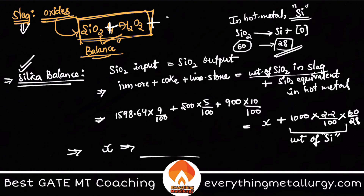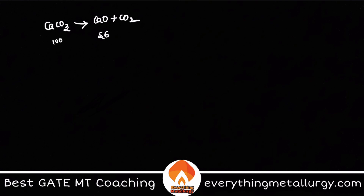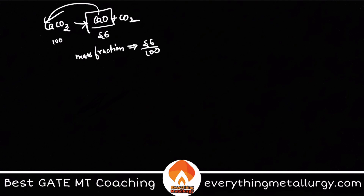One more important thing: CaO. CaO comes from limestone via the reaction CaCO3 → CaO + CO2. The molecular weights are: CaCO3 = 100, CaO = 56. So the mass fraction is 56/100 — if you know the weight of CaCO3 input, multiply by 56/100 to get CaO. CaO only comes from limestone and all of it goes into the slag, so CaO in slag = limestone weight × (95/100) × (56/100).